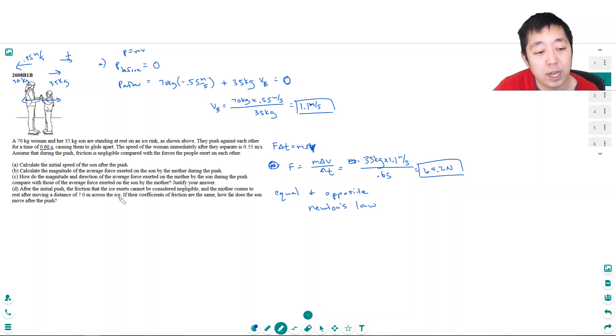After the initial push, the friction on the ice cannot be considered negligible, and the mother comes to rest after moving 7 meters across the ice. If their coefficients of friction are the same, how far does the son move after the push?